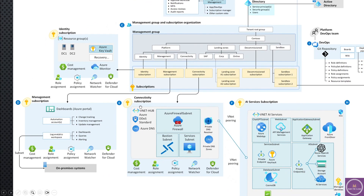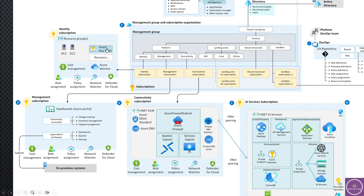The management subscription contains the Log Analytics workspace where you save logs, Azure Monitor, and an automation account from which you can run all automation centrally across different subscriptions, as well as role assignments and policy assignments. The third subscription is the identity subscription. If you have a hybrid environment with an on-prem Active Directory, you deploy domain controllers in Azure for better Active Directory management along with DNS. Recovery Service Vaults and Azure Key Vault are also defined in the identity subscription.